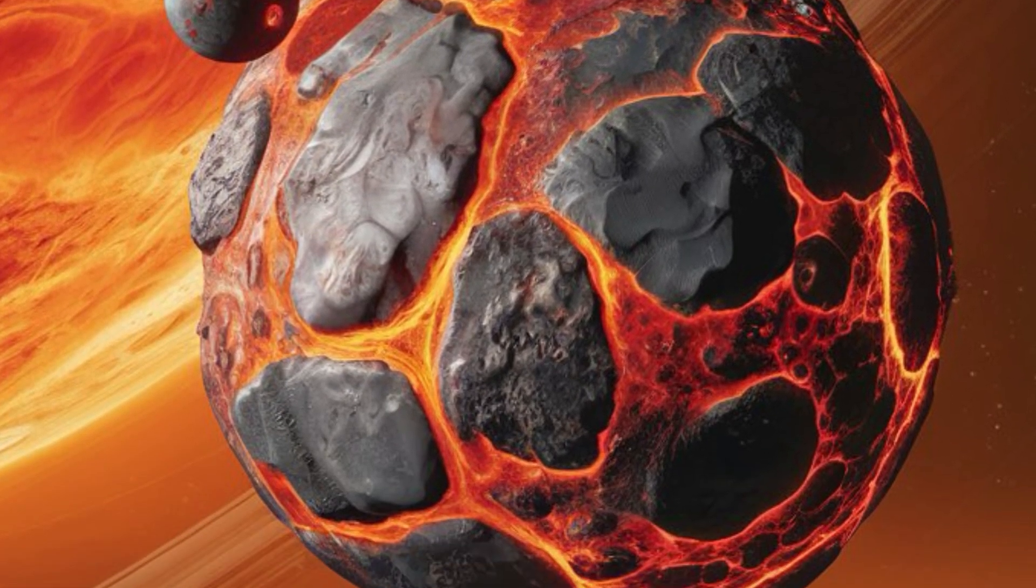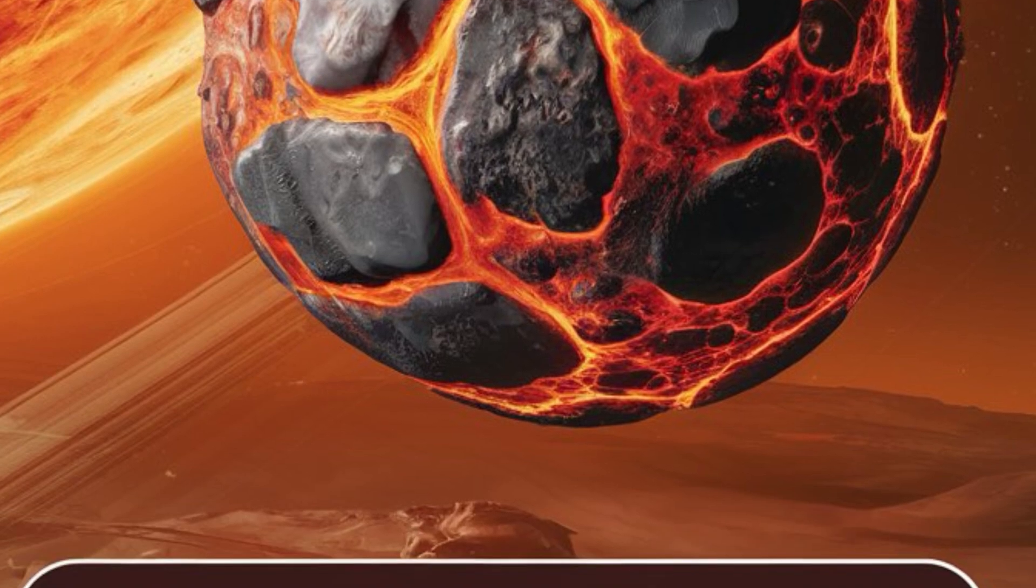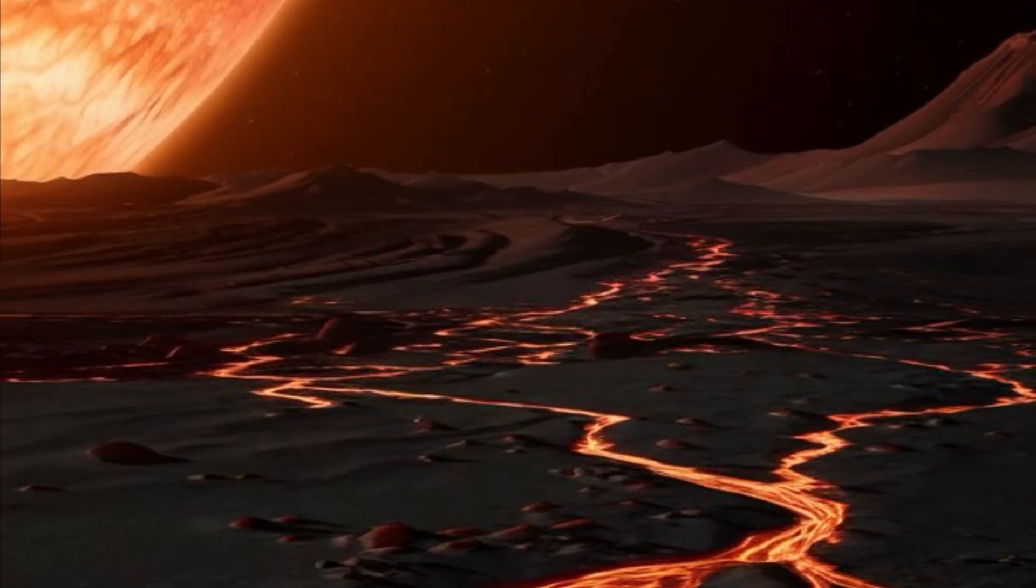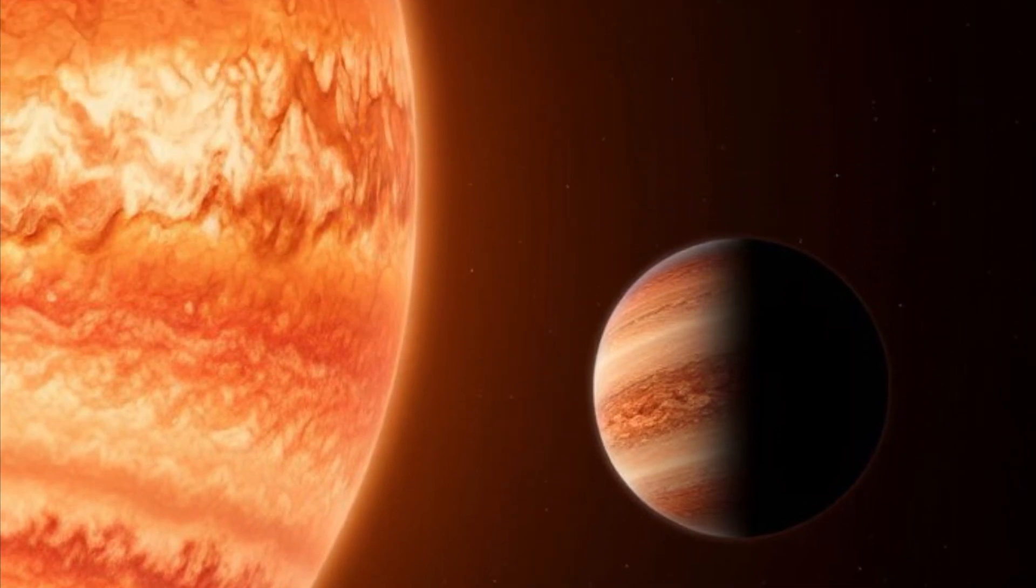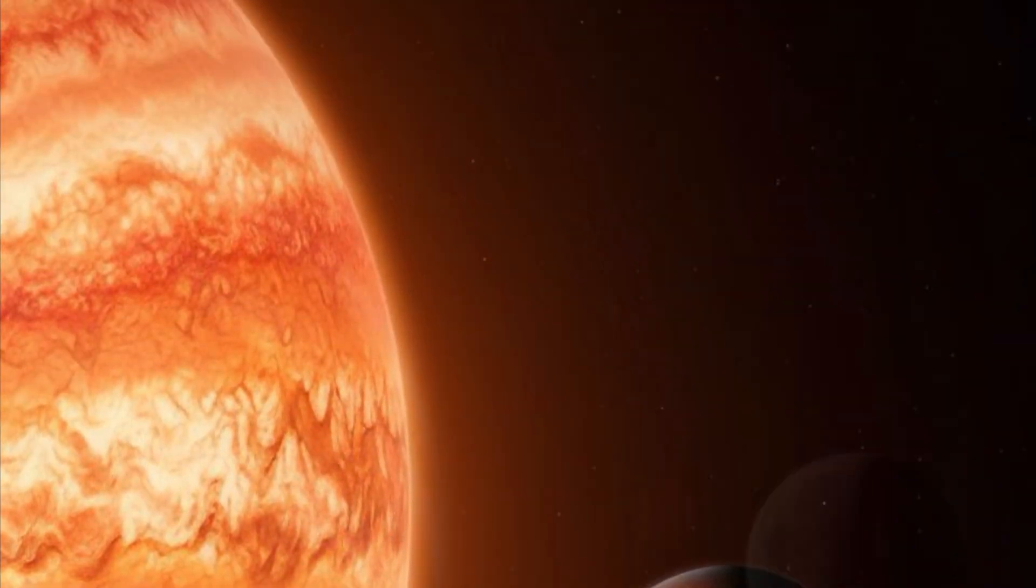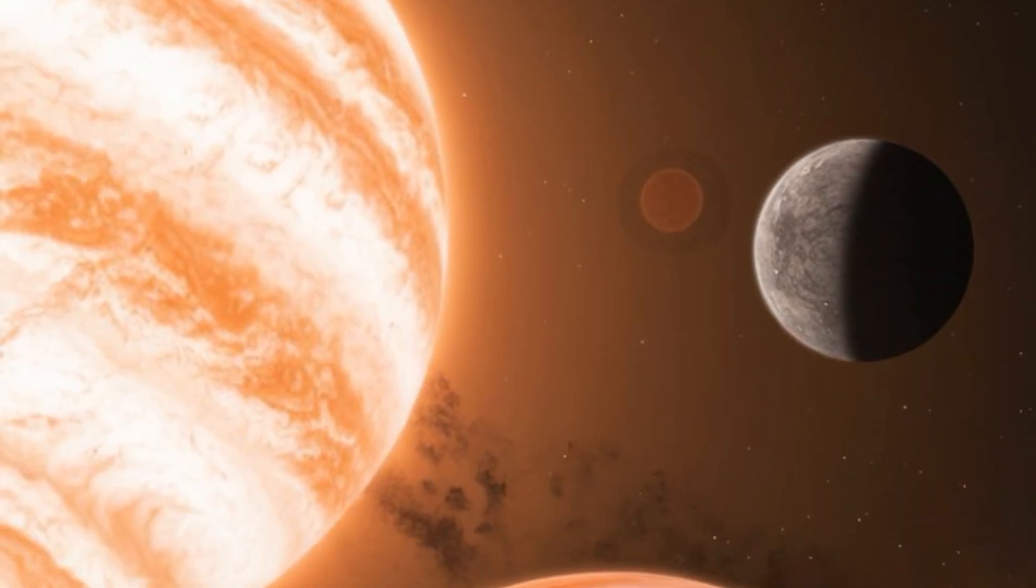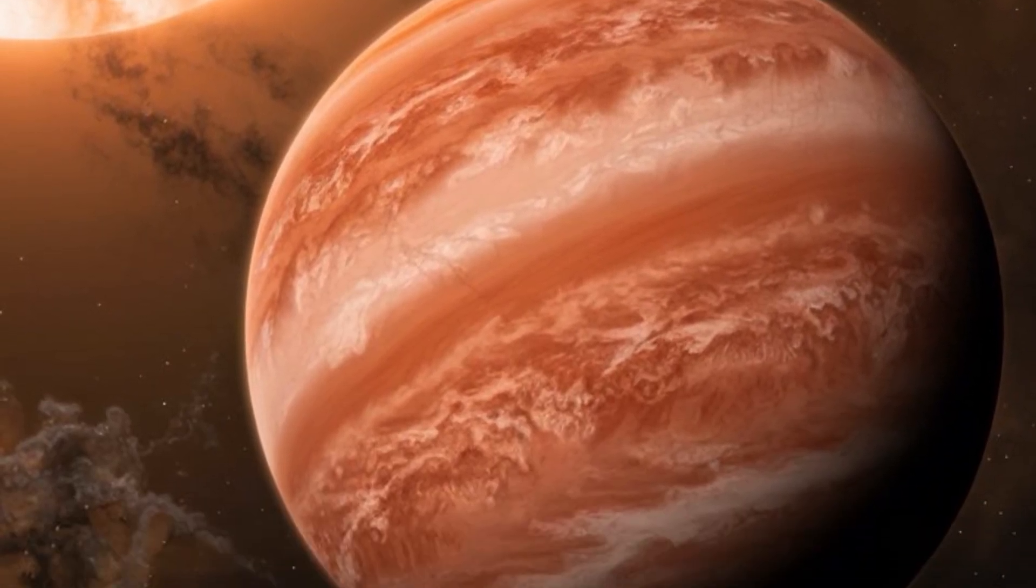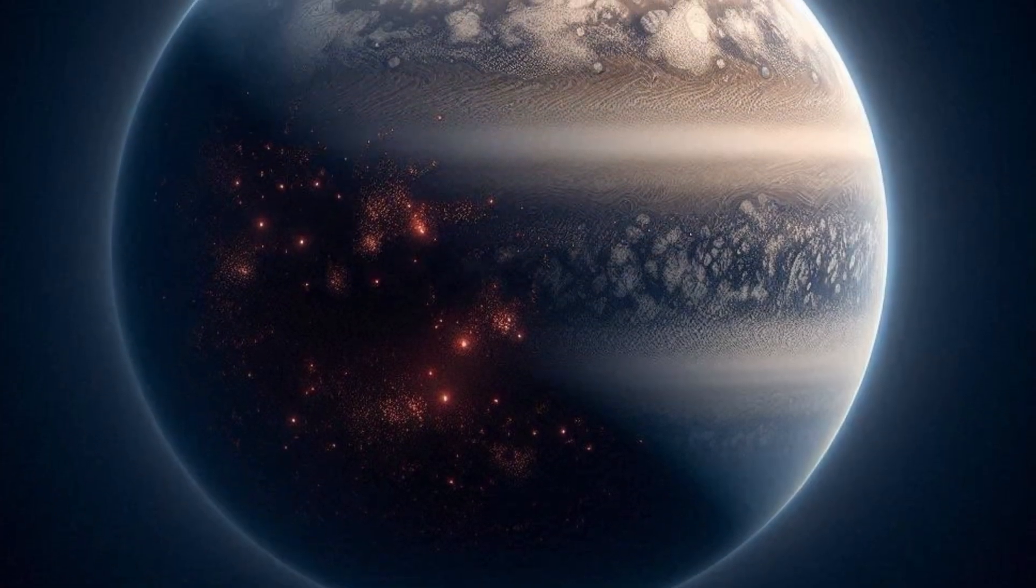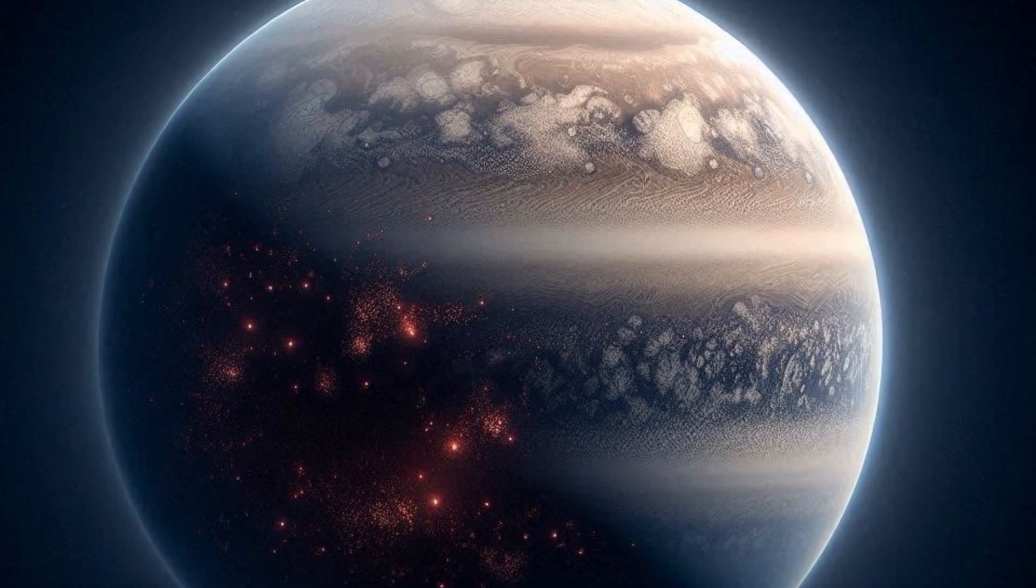One of the most striking aspects of 55 Cancri e is its extreme proximity to its host star. It orbits at a distance so close that a year on this planet lasts only about 18 hours. This proximity results in extraordinarily high surface temperatures, with the dayside reaching over 2,700 degrees Celsius, about 4,900 degrees Fahrenheit.